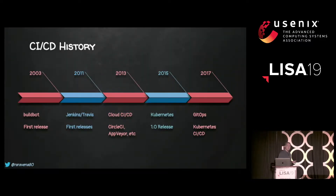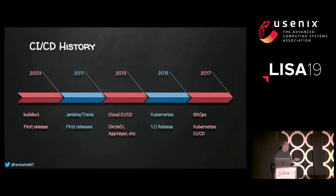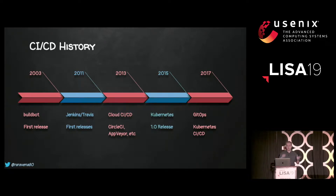A little history of CI/CD: in 2003, BuildBot was the first CI tool, still available today but pretty bare bones. In 2011, Jenkins released its first version, and that's when people started talking about CI and automatically running workloads. In 2013, cloud providers started SaaS CI/CD services like CircleCI and AppVeyor. In 2015, Kubernetes released its first version, prompting discussion about automatically deploying containers into production and orchestrating workloads. And in 2017, GitOps was coined as a phrase by Weaveworks.